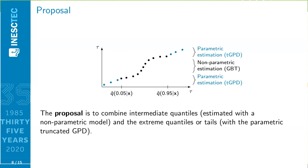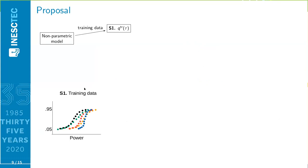So, in summary, we propose to combine intermediate quantiles estimated with a non-parametric model and extreme quantiles, or tails, with a parametric model, which is the truncated GPD. Since non-parametric approaches do not properly estimate, we propose to apply the extreme value theory directly to historical data. And the selection of the relevant historical data to estimate the truncated GPD is guided by the non-parametric model. I will try to explain it in more detail. Our proposal consists of the following steps.